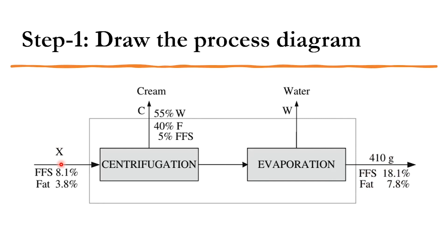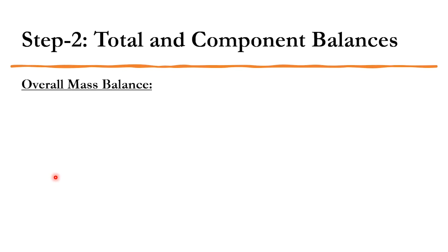We know the value of the product flow but not the inlet flow. So x, c, and w are unknown. We know the composition at each stage — the inlet, the cream, the water, and the product. The overall mass balance gives: x = c + w + 410. The balance will be increased because there are three components involved in the system.